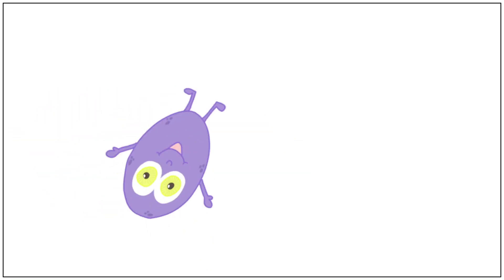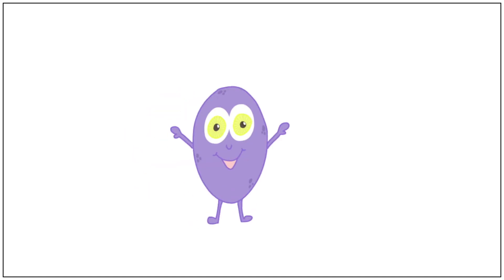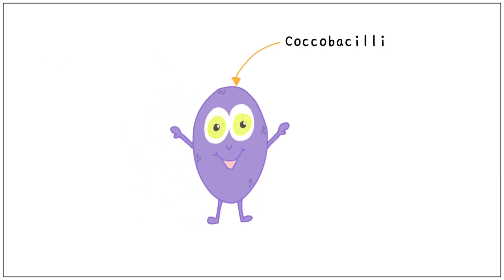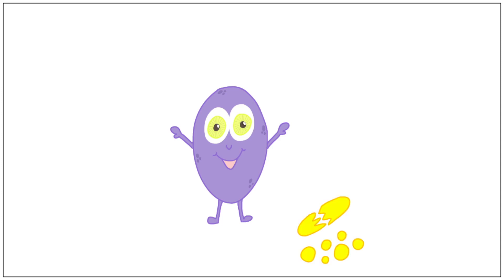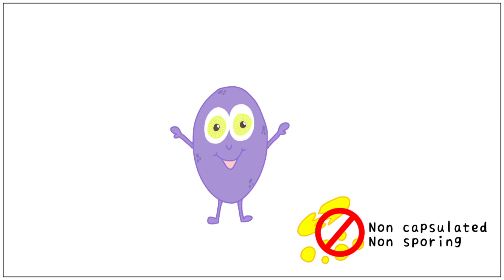It has a characteristic feature of tumbling motility, especially in culture broth. It is a coccobacilli, which means it is a short, stout rod. It is purple in color, meaning gram positive. It is a non-capsulated and non-sporing organism.